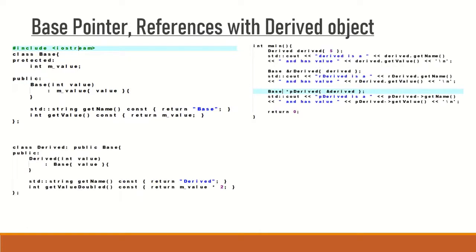In the next example, we're going to see a more complex example on the same topic. After discussing that example, I'm going to introduce a concept called virtual function, and we're going to learn how we can access the derived class function using a base class reference and pointer, and also understand what is the need of this.